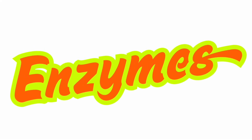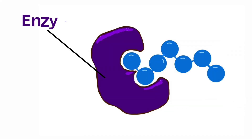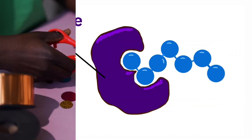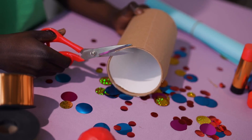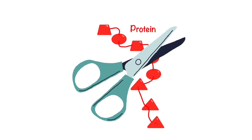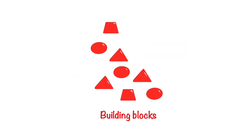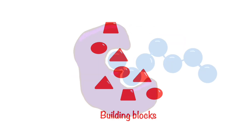Living things contain enzymes. Let's have a look at what enzymes are. I've labelled an enzyme in this diagram. Enzymes work a bit like scissors — they find large molecules, like this protein, and break them up into smaller molecules, like these amino acids.